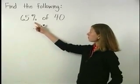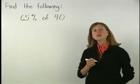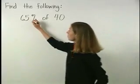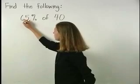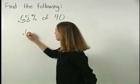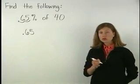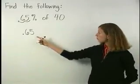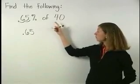To find 65% of 40, first write 65% as a decimal by moving the decimal point two places to the left to get .65. Next, the word of means multiply, so we have .65 times 40.